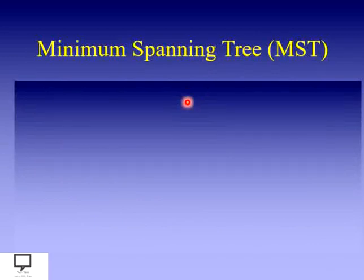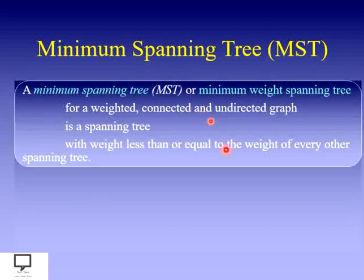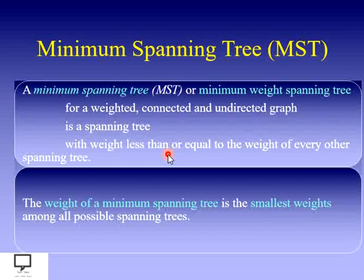Let's start with a minimum spanning tree. What is a minimum spanning tree and how to find it — all these things I have already explained in my previous video. A minimum spanning tree is a spanning tree found from a weighted, connected, and undirected graph where the weight should be minimum. The weight of a minimum spanning tree is the smallest weight among all possible spanning trees, since we can form n number of spanning trees for a given graph.